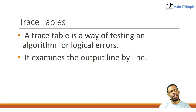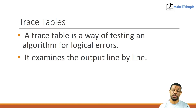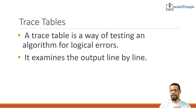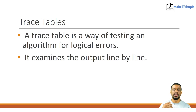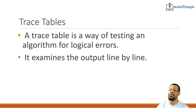Think of a trace table as a real-time check of what is supposed to happen. Like when you have to go somewhere, you check to make sure you have your phone, your keys, and your mask. If each one of them isn't lined up in the correct place, you have a problem. A trace table is a way to check the algorithm to see if there is a problem, because an algorithm is supposed to accomplish a particular task.